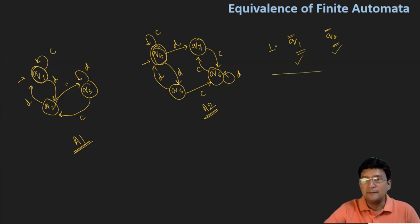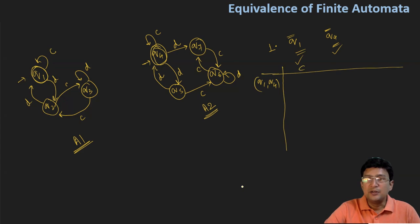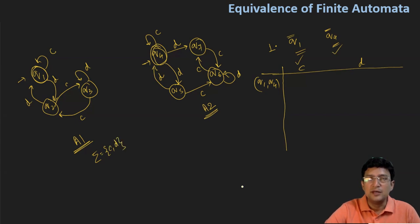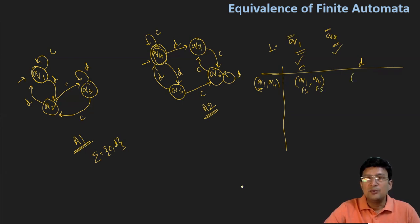We will perform the rest of the things as rule 2: we take pairs of states, starting with the initial states Q1 and Q4. Let us see the transition of Q1 and Q4 on symbols C and D, which are in the alphabet set of both automata. The transition of Q1 with C remains at Q1, and the transition of Q4 with C remains at Q4. Q1 is a final state and Q4 is also a final state, so everything is good. Now, Q1 on D moves to Q2 and Q4 on D moves to Q5.